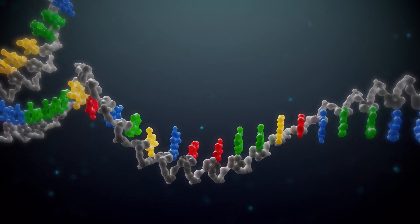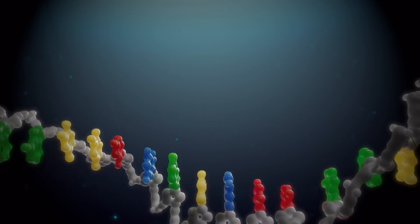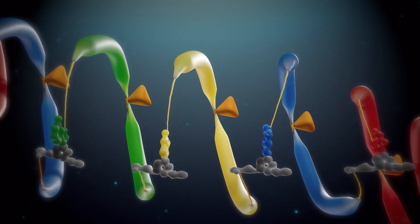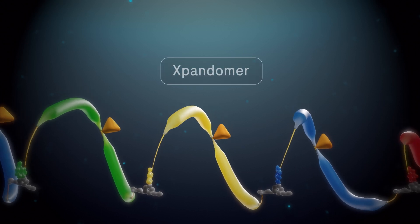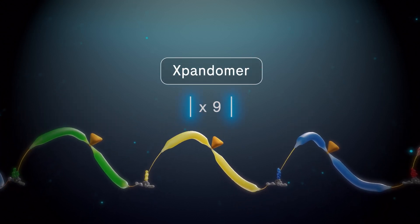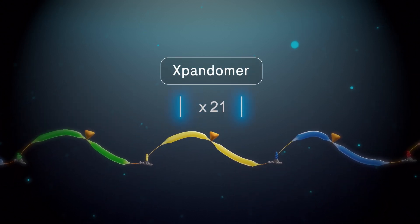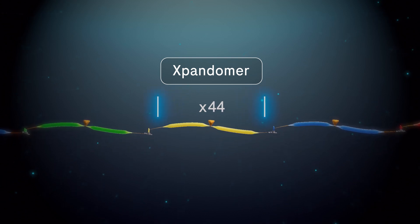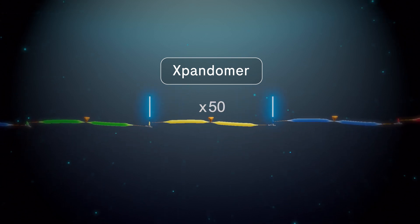Sequencing by expansion technology, or SBX, overcomes this limitation by creating a surrogate molecule called an expandomer. This molecule is more than 50 times longer than its target DNA and encodes the DNA sequence information in large, high-signal-to-noise reporters.